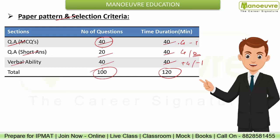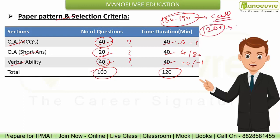Now, how many questions do you need to solve to crack the sectional cutoff? If you have scored around 180 or 190, and if you have scored 120 plus marks, you can get a call from IIM Indore. But if you have scored 180 or 190 with most marks in English and MCQs, but have not crossed the sectional cutoff in short answer, then you will not get a call. That's why we are talking about the paper pattern.